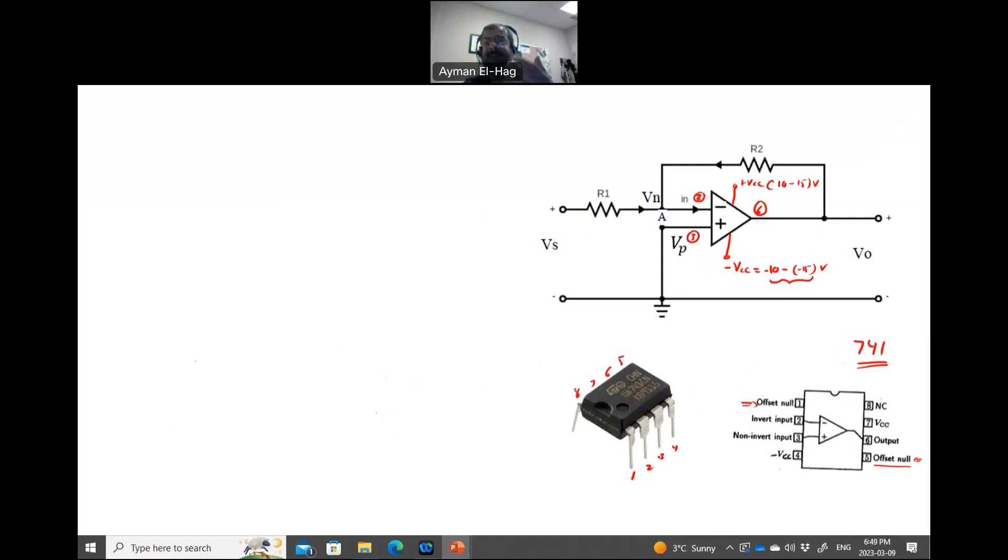And I will show you that after I finish the derivation for the output voltage for an inverting amplifier, I will show you how this is connected in real circuit. So basically, this non-inverting connected to the ground. So the voltage here, V is equal to 0. And here the voltage is basically V is equal to 0.